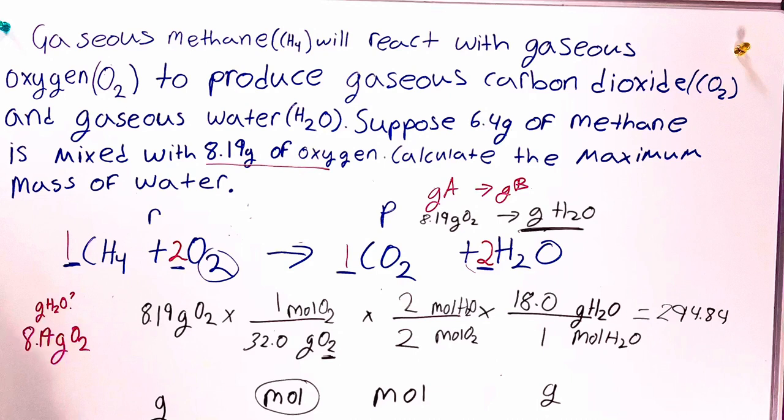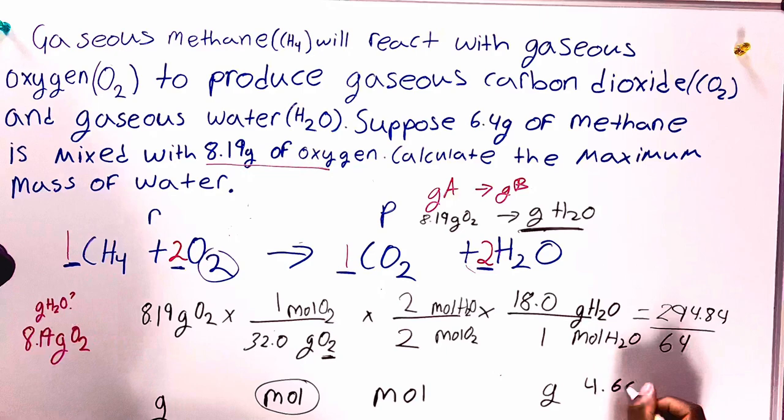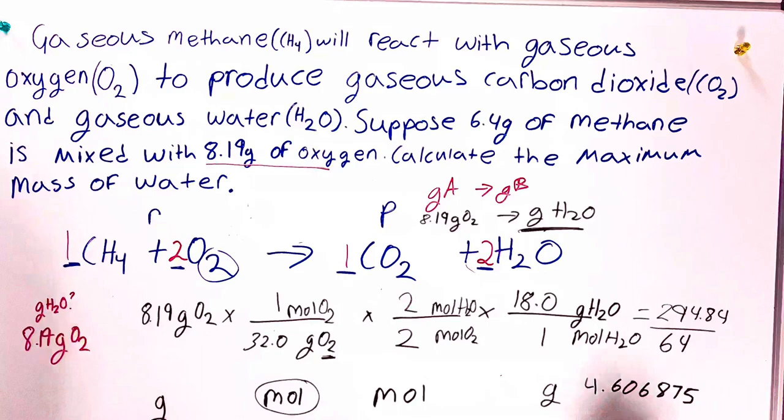The next step, we need to multiply everything on the bottom. We'll do 32.0 times 2 times 1. And you should get 64. Now, we just need to divide these two values. You'll take 294.84 divided by 64. And then, you should get 4.60687.